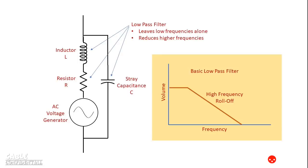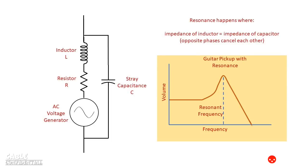But there is a special characteristic of this filter if the values of resistance, inductance, and capacitance are in the right range, and this is called resonance. Resonance happens when the impedance of the inductance equals the impedance of the capacitance, and they effectively cancel each other out. This causes a sharp rise at a point called the resonant frequency. So low frequencies are still left alone as before, but there is a middle range of frequencies that gets increased before the high frequency roll off begins.